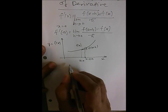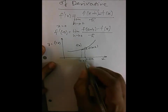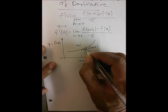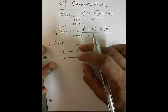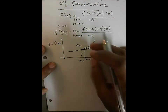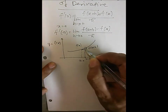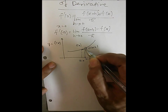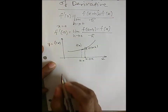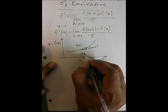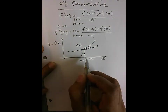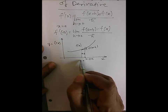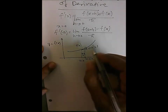That difference represents the height of this triangle, and the width is nothing but a plus h minus a, equal to h.